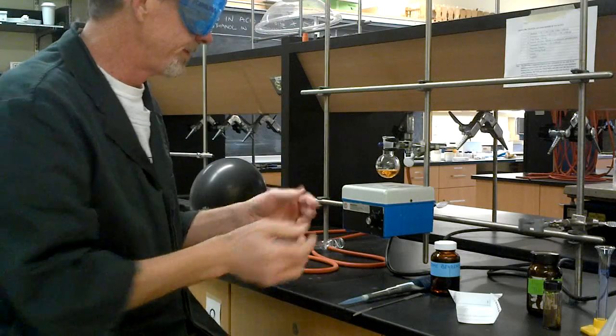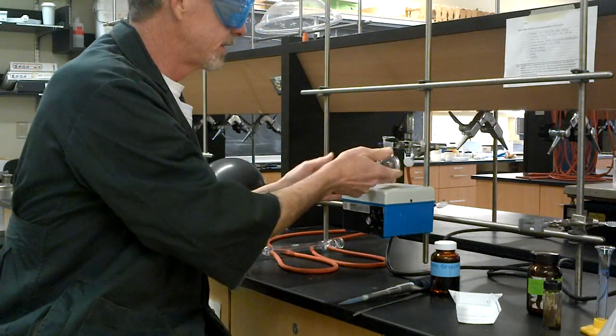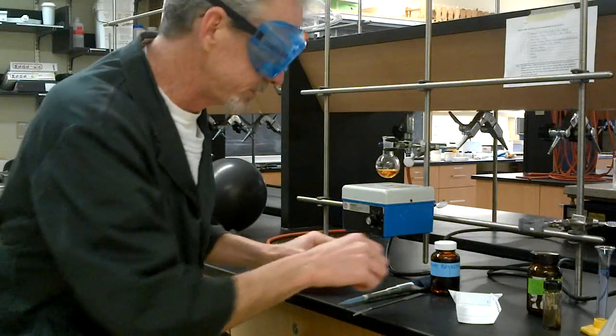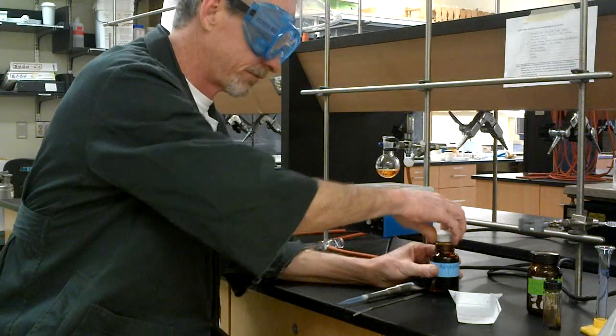Now what do we have to do? We've got that stirring. We've got the diethyl ether. The iodine is going to clean the surface of the magnesium a little bit, help activate it so it will react.